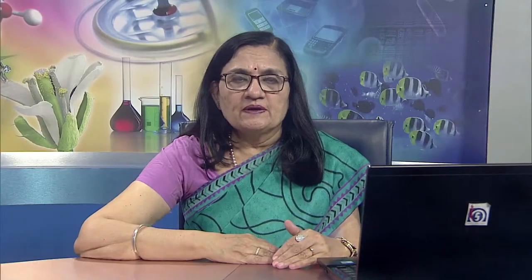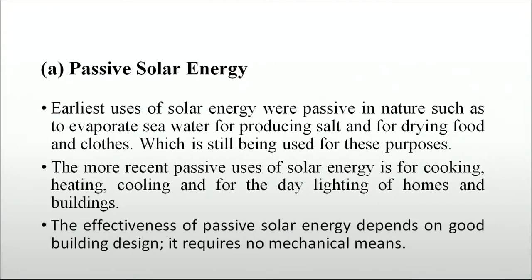Direct use of solar energy can be harnessed through systems that may be passive, active or photovoltaic. The earliest uses of solar energy were passive in nature, such as evaporating sea water to produce salt and drying food and clothes, which is still used today. More recent passive use includes cooking, heating, cooling and daylighting of homes and buildings. The effectiveness of passive solar energy depends on good building design and requires no mechanical means.